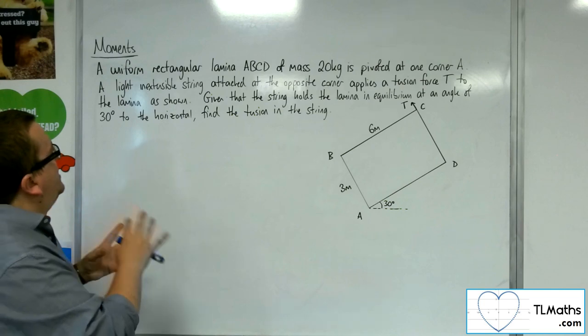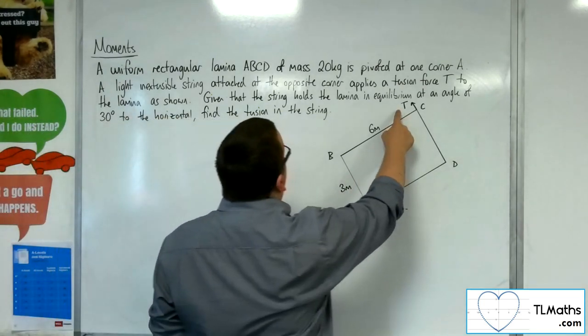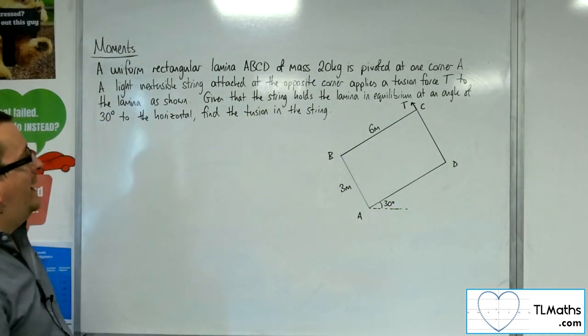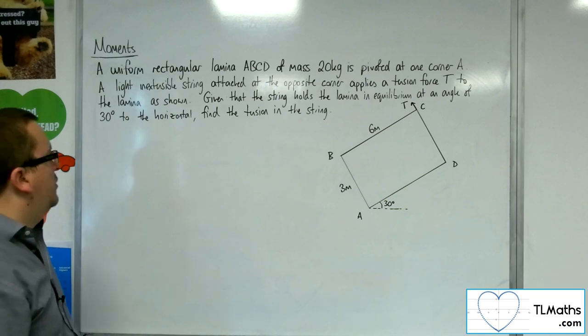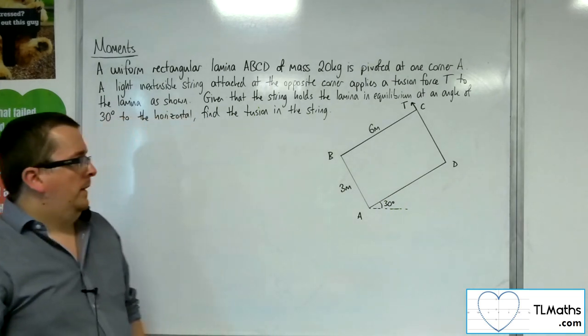A light, inextensible string attached to the opposite corner applies a tension force T to the laminar as shown. Given that the string holds the laminar in equilibrium at an angle of 30 degrees to the horizontal, find the tension in the string.